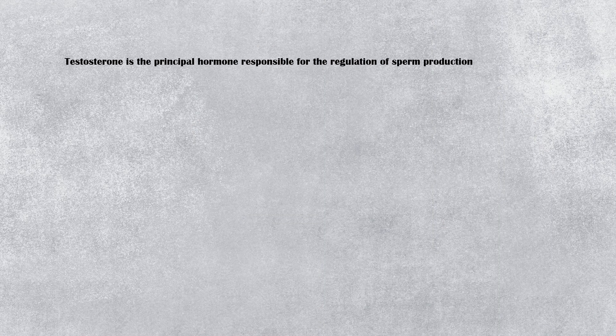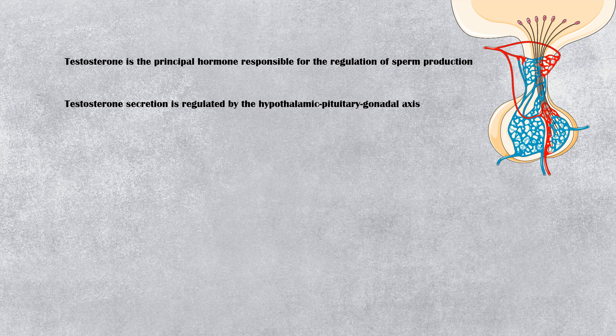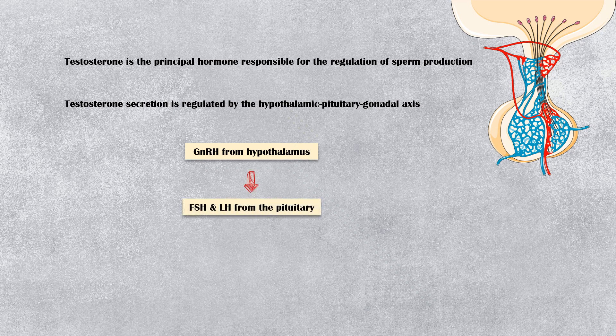Testosterone is the principal hormone responsible for the regulation of sperm production. Testosterone secretion is regulated by the hypothalamic pituitary gonadal axis. GNRH hormone, released from the hypothalamus, stimulates the anterior pituitary gland to secrete FSH and LH hormones, which are the major gonadotropic hormones in humans.